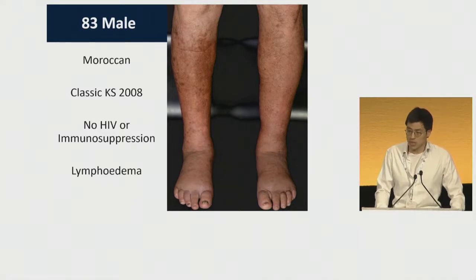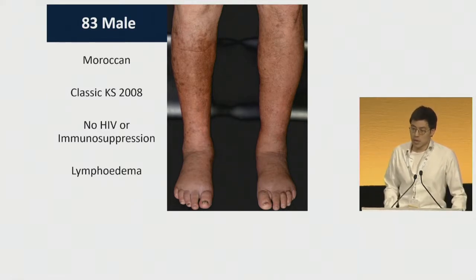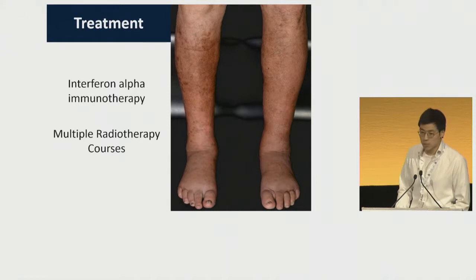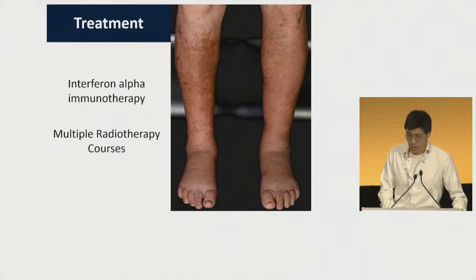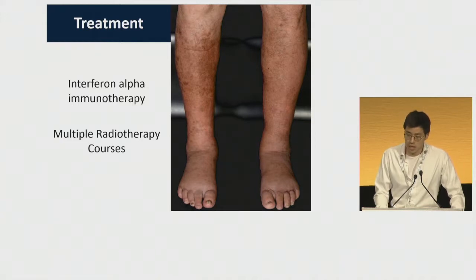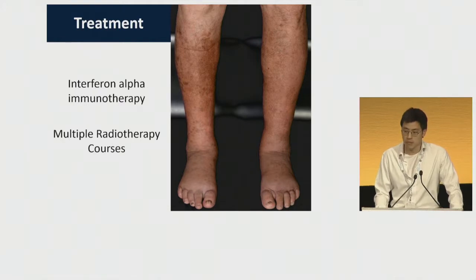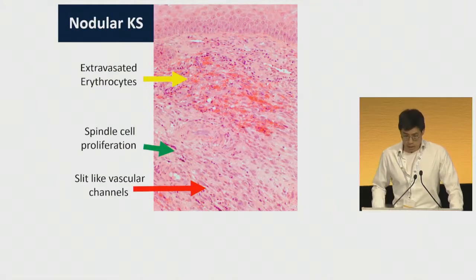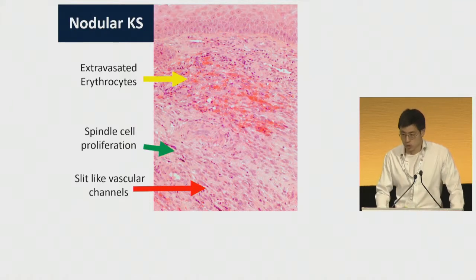This was in a background of lymphedema. He has a number of hyperpigmented patches and plaques and nodules on his lower legs. He'd been having this for a number of years and been treated with multiple courses of radiotherapy as well as interferon-alpha immunotherapy. A biopsy of one of these lesions showed classic features of a nodular KS.